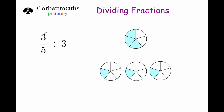Our first question is to divide 3 fifths by 3. If we've got 3 fifths and we were to share equally between 3 people, each person would get 1 fifth. So 3 fifths divided by 3 is 1 fifth. As you can see, the numerator — the number on top of the fraction — is divisible by 3. So if the numerator is divisible by the number you're dividing by, you just divide that number by the number you're dividing by. So 3 divided by 3 is 1, and 3 fifths divided by 3 is 1 fifth.